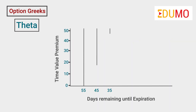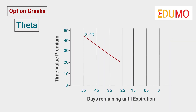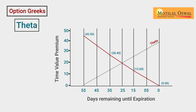Normally, it has been seen that the Theta values are very high as the options contract approaches expiry. That means that premiums lose out on value fast as expiry approaches. And towards the beginning of the contract, the Theta values are low, meaning that with each passing day, the decay in premiums is less.